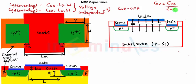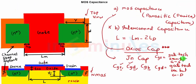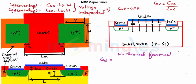Now we start with region A, the cutoff region. In the cutoff region, no channel is formed. By definition, CGS is the gate-to-channel capacitance seen between the gate and source, but since there is no channel, there is no gate-to-channel capacitance. So CGS is 0, and CGD is also 0.